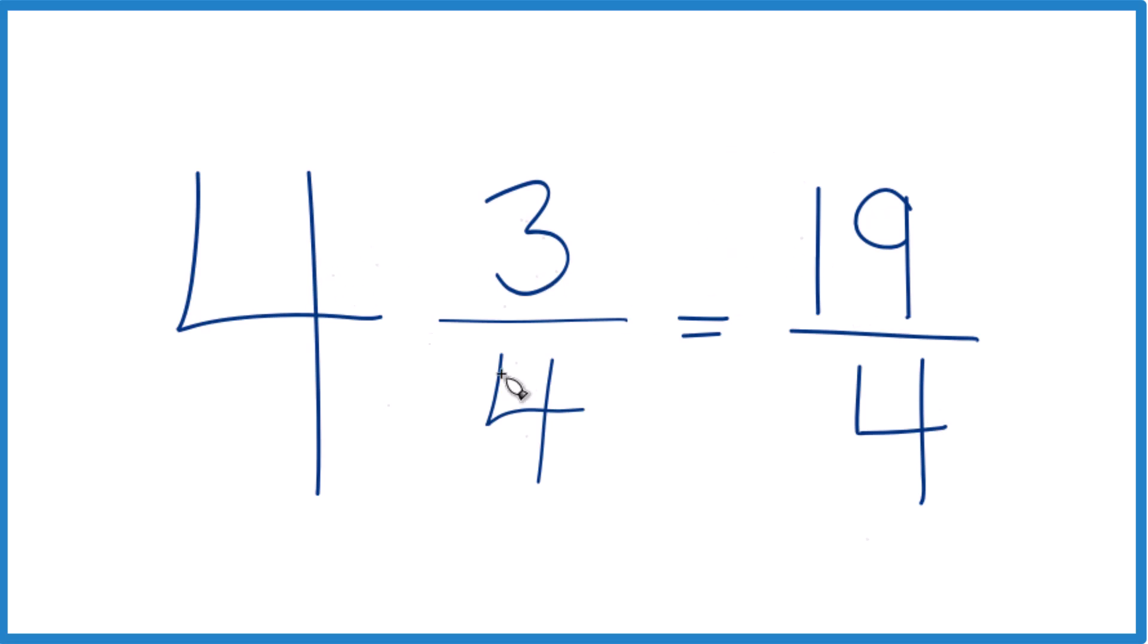Let's do it again. 4 times 4, that's 16. 16 plus 3, that gives us 19, the numerator, and we just bring the denominator 4 across. You got it. That's the improper fraction for the mixed number, 4 and 3 fourths.